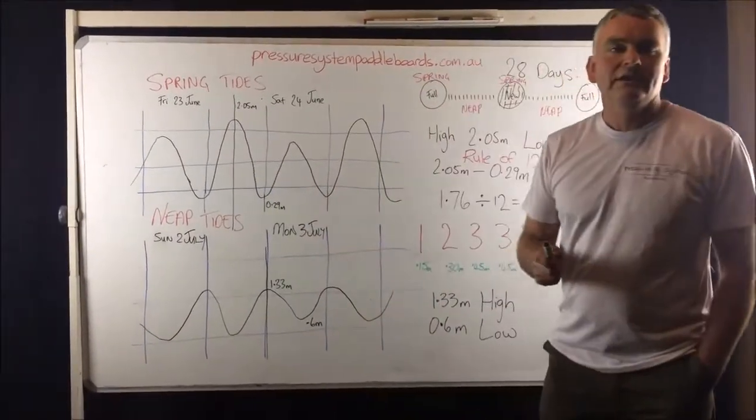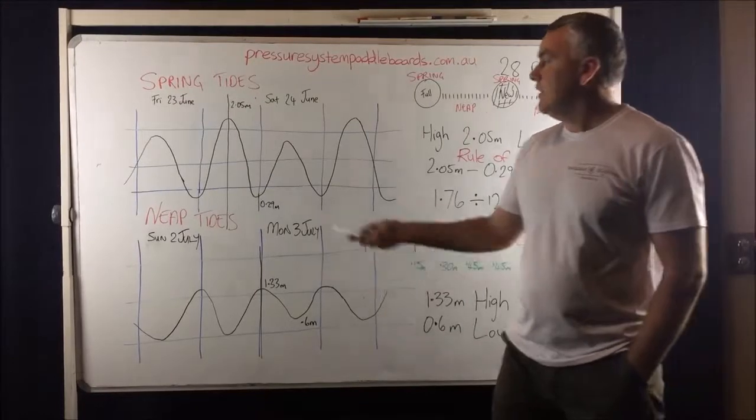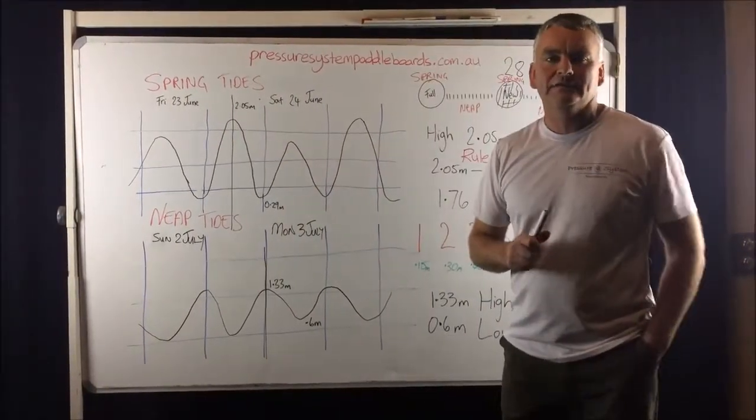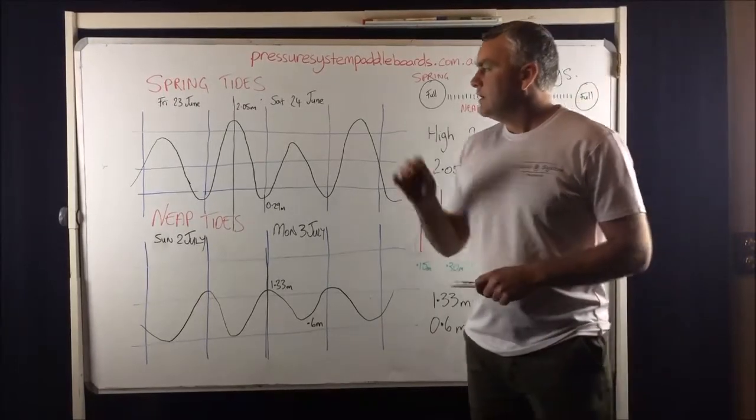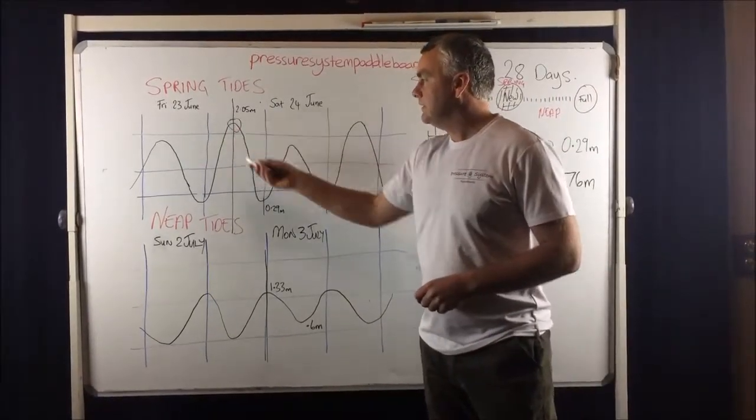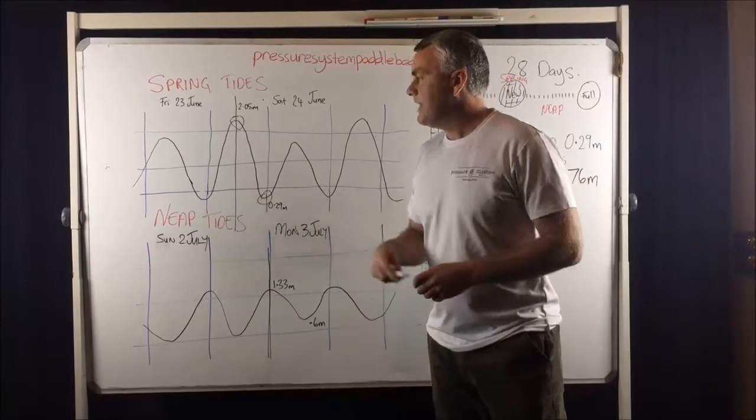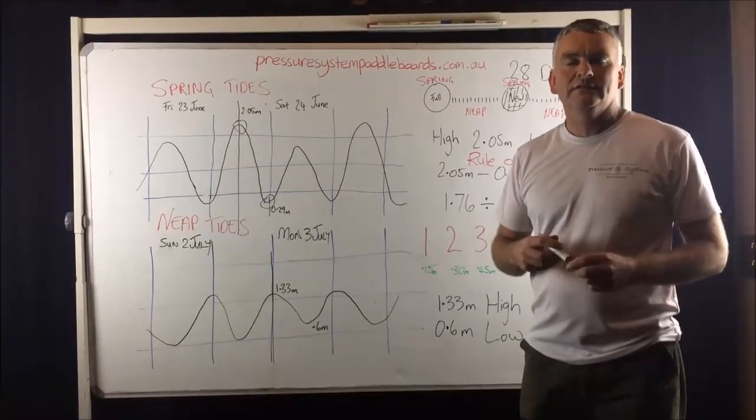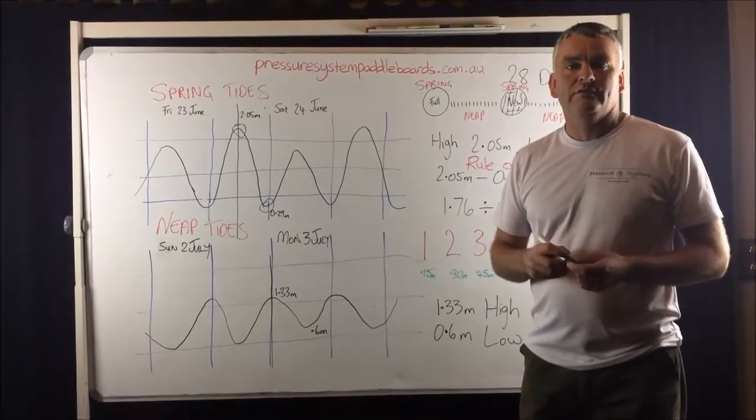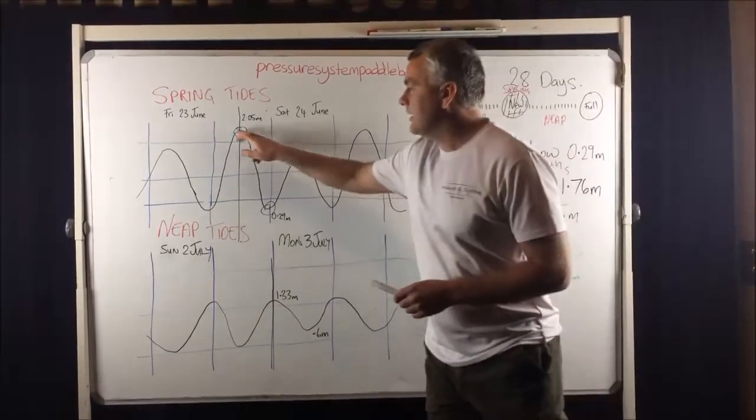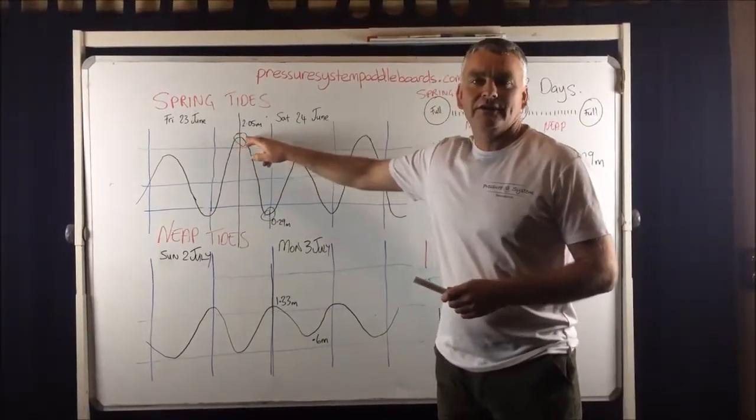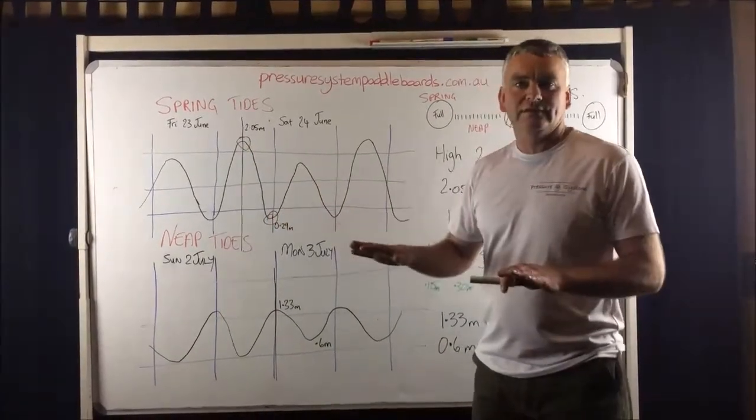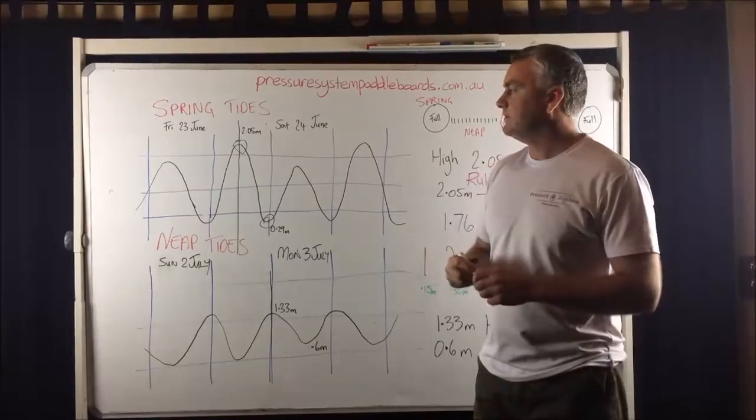Now with that in mind, if I want to plan a paddle on this spring tide here, and this is how I do it for my classes, I try and get it as close as the peak here or the low here. That's when the water's at its slowest. Now my classes run for 1.5 hours. So I'm not going to get a 1.5 hour period here where the water's dead still. I'm going to have to work with a bit of tide.